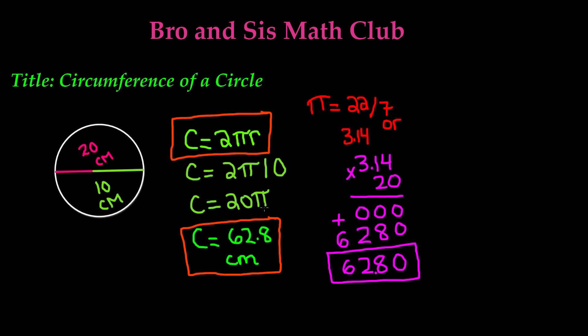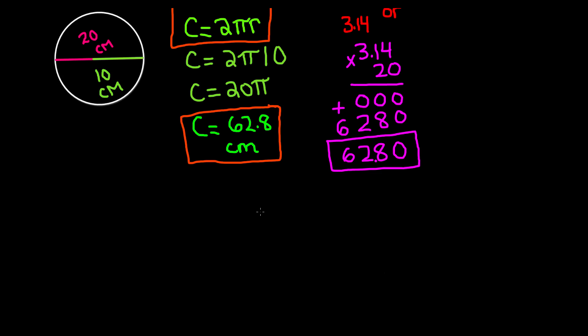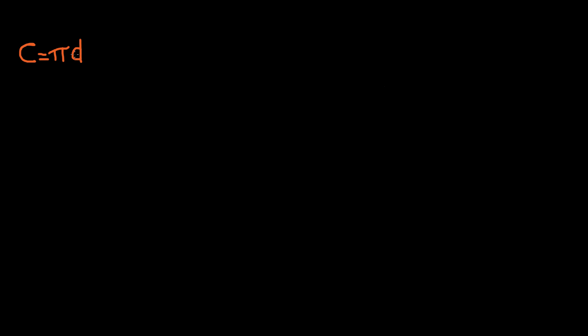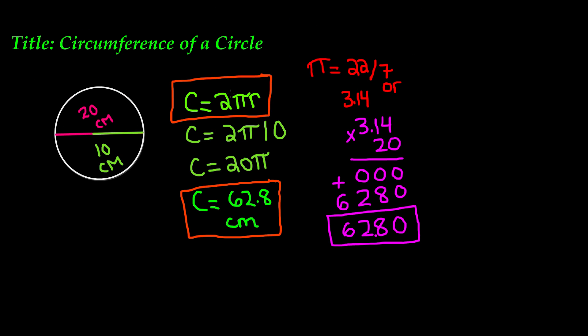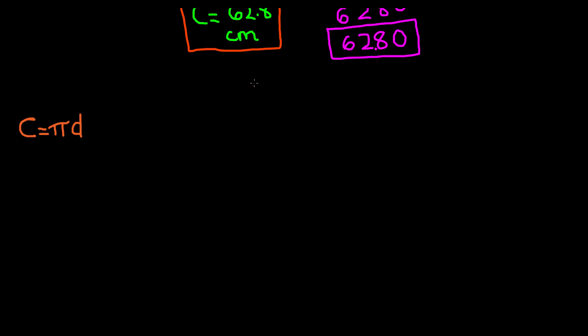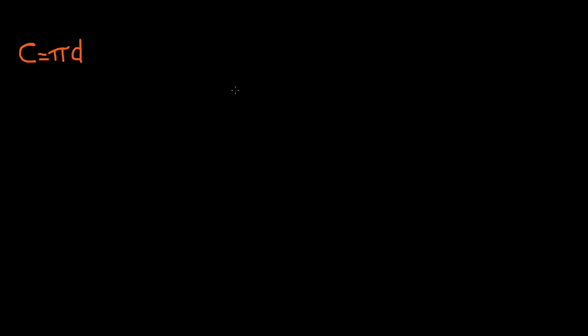Now let's find the circumference using the second method. The second formula is circumference equals pi times d, where d stands for diameter. In the first formula we used 2πr — multiplying 2 times the radius gives you the diameter. So this formula is just shortened: C = πd, meaning you multiply pi times the diameter.